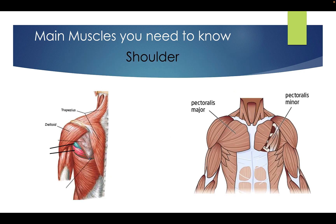When we break these down a little bit further, these are the muscles you need to know within the different sections of the body. The main muscles you need to know for the shoulder are the pectoralis major and pectoralis minor — so your pec — and the pectoralis minor is behind the pec itself, attached to the ribs. On the other side you need to know the trapezius and the deltoid.